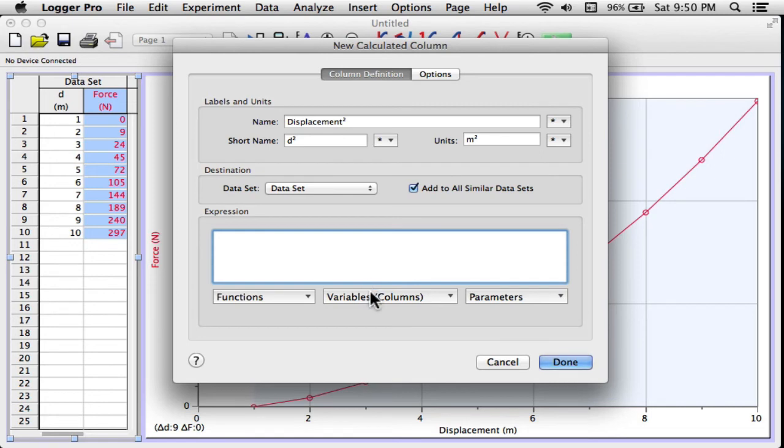Choose a variable. The variable I want is going to be the displacement column. So I renamed it. That's why I know it's the displacement column. I'll click on the variables column down here, go down to displacement and select that. And then I'll square it. So just like on a graphing calculator, I'll use caret and the number two. So I'll do that to square it. Done.